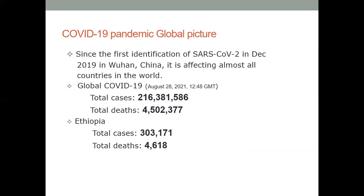As we all know, since the beginning of this global pandemic with SARS-CoV-2 in December 2019 from one state in China, we're now at a point where this virus has reached almost the whole world, afflicting a total of more than 216 million people and causing close to 4.5 million deaths. When we come to our country, as of the last report today, the total cases exceed 303,000 and total deaths are 4,600 patients.